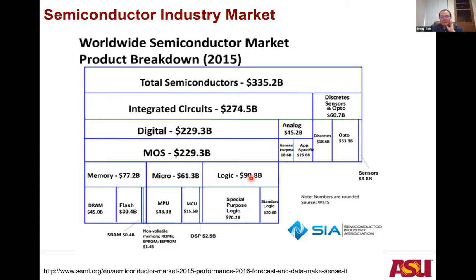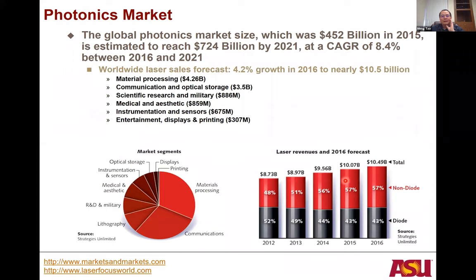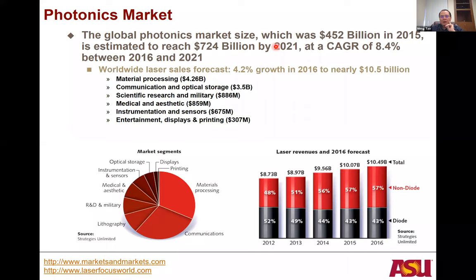The photonics market has more products than the semiconductor market because in photonics you often have one device doing one job, rather than one chip doing many things. Overall the photonics market is about 700 billion dollars in 2021, roughly similar in total size to semiconductors, but with a much larger number of individual products.